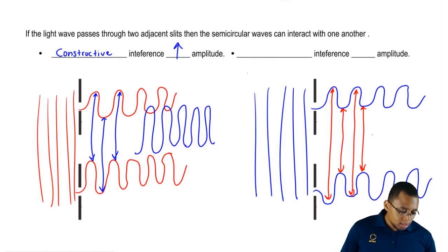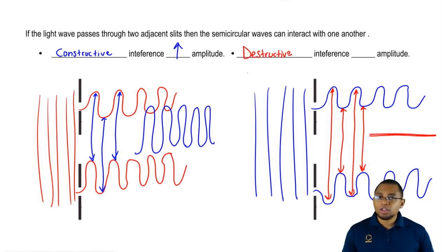Instead of them adding up together, we're going to get no wave at all at the end because both waves wind up destroying one another. We're going to say this is destructive interference and since we destroy the wave, the amplitude gets destroyed too. The amplitude disappears because the wave disappears.